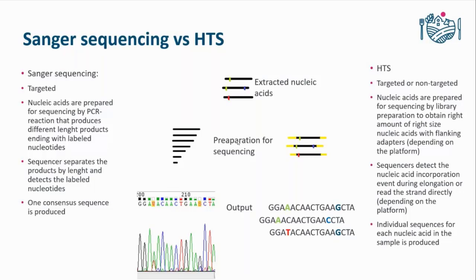In Sanger sequencing, as you can see in this diagram, you might have some indication that there are different nucleotides at certain points, resulting in an uncertain nucleotide call. But with HDS, you get each individual sequence separately, so you know exactly that in one of your molecules you might have an A at a position where another molecule has a T, for example. You can actually see what kind of variation you have in your sequences.